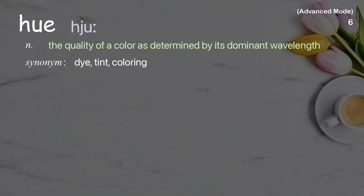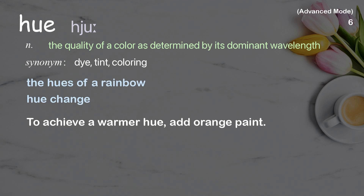Hue: the quality of a color as determined by its dominant wavelength. Examples: the hues of a rainbow, hue change. To achieve a warmer hue, add orange paint.